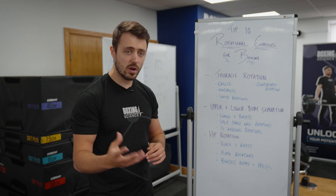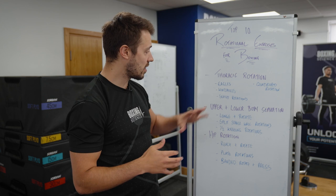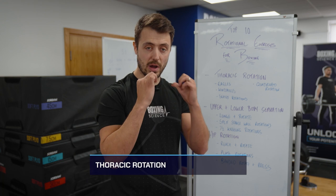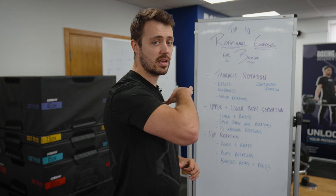Rotational mobility covers three different sections, and today I'm going to take you through these three sections as well as showing you exercise demonstrations for each. The first one is thoracic rotation — improving the amount of rotation we get from the thoracic spine, which is towards the top end of the back — wanting to improve rotation through the upper back and shoulders.